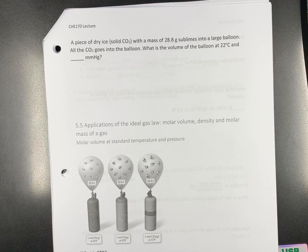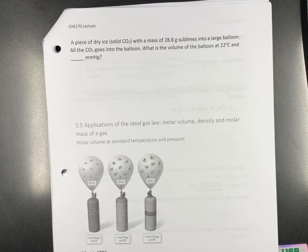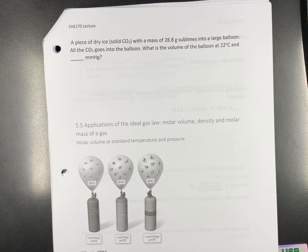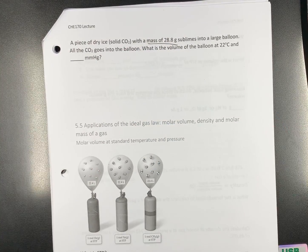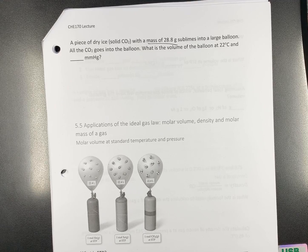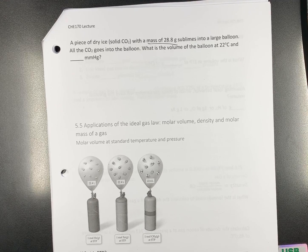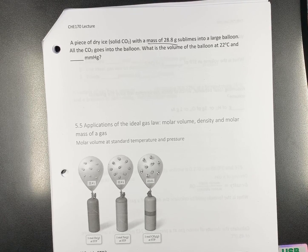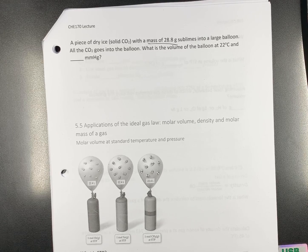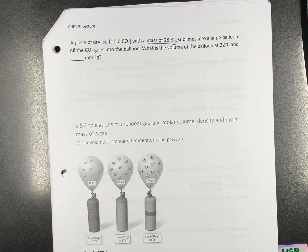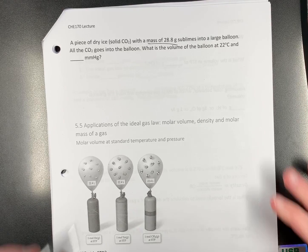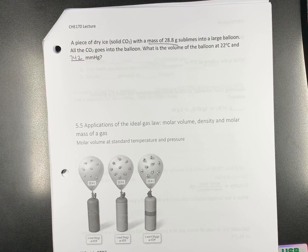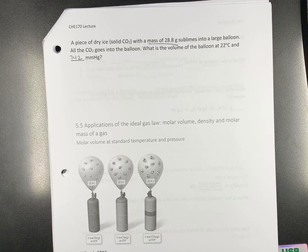Let's do this last problem. A piece of dry ice, which is solid carbon dioxide, has a mass of 28.8 grams. And, it sublimes. That means it goes directly from a solid to a gas into a large balloon. We don't lose any. All the gas goes into the balloon. What's the volume of the balloon at 22 degrees Celsius and 742 millimeters of mercury?